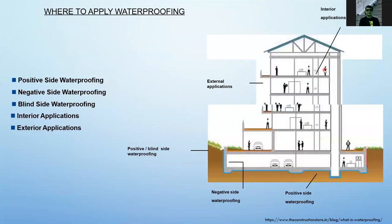Where do you apply waterproofing? You can apply waterproofing on the positive side — the external part exposed to hydrostatic pressure. There is also the negative side, which is inside the building, and the blind side. As shown in this diagram, this is the positive side, this is the negative side, and this is the blind side for a basement.